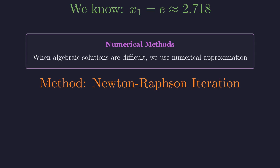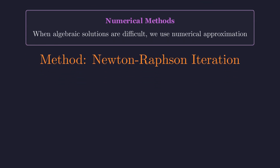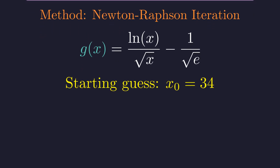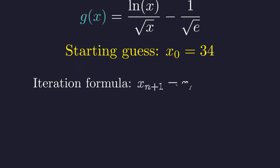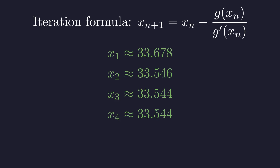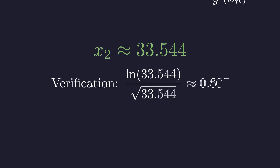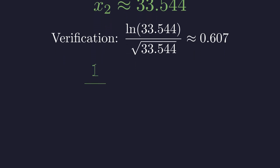We'll use the Newton-Raphson method, which iteratively refines our estimate. We define a function g(x) by moving everything to one side — we're looking for where this function equals zero. From the graph, we know the second zero is somewhere around 34, so let's use 34 as our initial guess. The Newton-Raphson formula tells us how to improve our guess at each step. After just a few iterations, the value converges rapidly. By the fourth iteration, we have a stable result: the second solution is approximately 33.544. Substituting back into our function confirms this matches our target value perfectly.